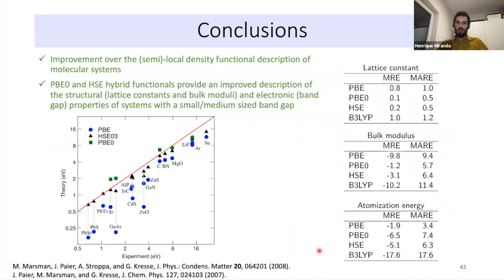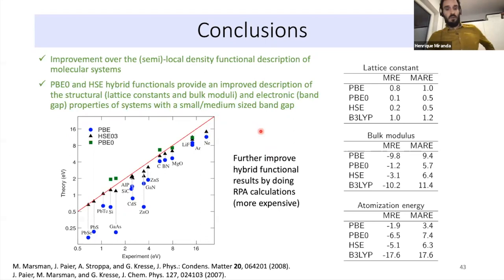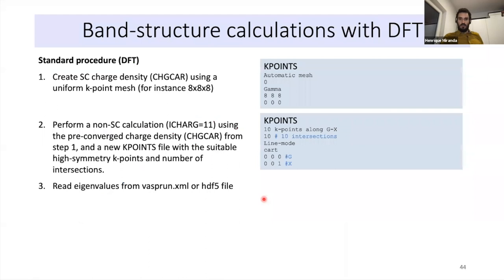In terms of results, hybrid functionals overall lead to improvement over semi-local density functional theory for many systems — both for electronic properties like band gaps (for small and medium gap systems) and for structural properties like lattice constants and bulk moduli. For large-gap systems hybrid functionals are not enough, and you need to go beyond — using GW calculations or RPA, which are more expensive but covered in tomorrow's talk.